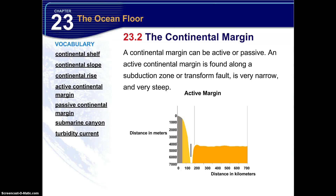Now a continental margin can be active or passive. An active continental margin is found along a subduction zone, or a transform fault, and is very narrow and very steep. Now both an active and a passive have a continental margin that begins with the shelf, has a slope, but here's the difference — an active continental margin has a trench. A passive continental margin has a rise. Now both of them continue on into the ocean basin, or the abyssal plain.